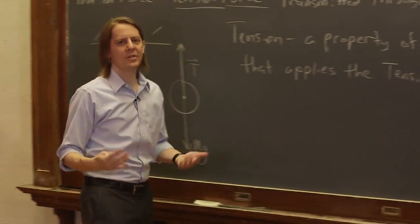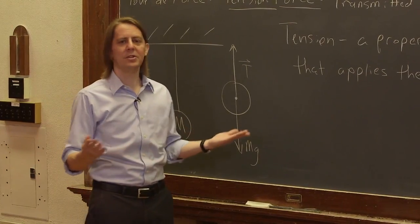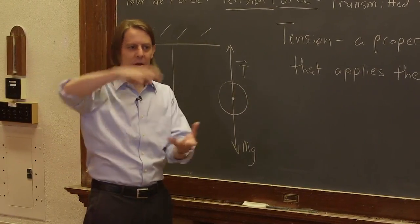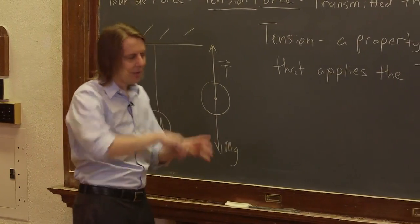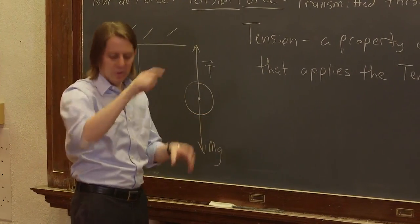If you say, what if nothing is attached to the end? Well, if nothing is attached to the end, there won't be any tension. Two things have to kind of pull, or gravity, or some other force has to put this thing under tension. And then it's simply a way to transmit that force to another object.